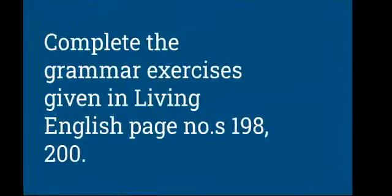Now let's recap what we have learned in this session: simple past tense and past perfect tense, and the combination of these two. The combination: past perfect tense uses had + V3 (past participle), and past tense uses the V2 form of the verb. Now complete the grammar exercises in Living English, page numbers 198 and 200 — these exercises are related to past tense and past perfect tense. Thank you for now. Meet you in the next class.